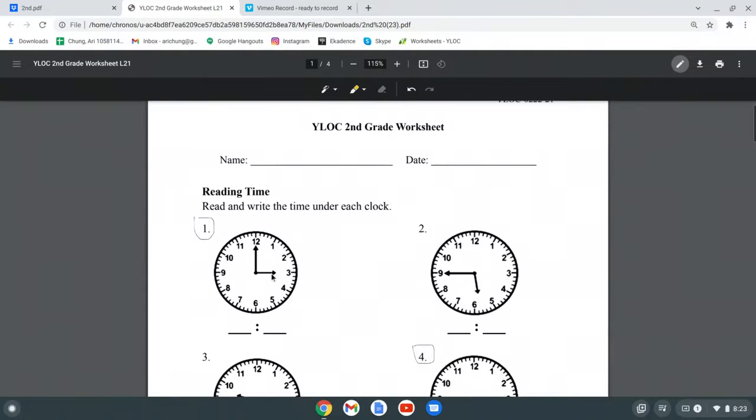So let's do number 1. Here we have a short hand and a long hand. The short hand is pointing right at 3, so it'll be 3 something. And since the longer hand is pointing at 12, and whenever the long hand is pointing at 12, it'll be o'clock. So 3 o'clock.